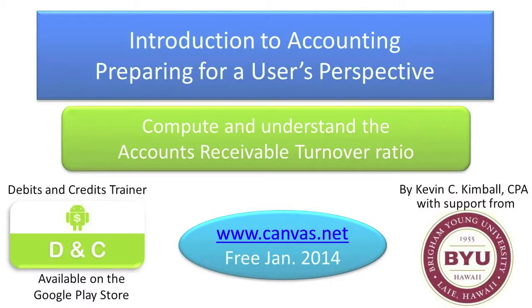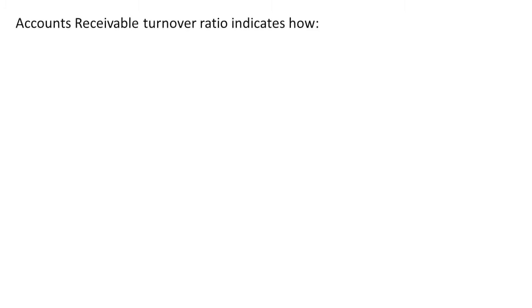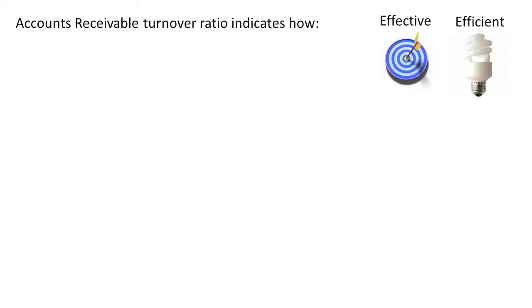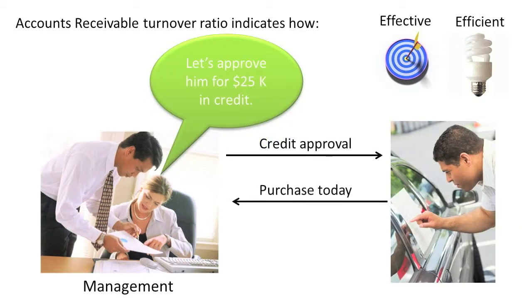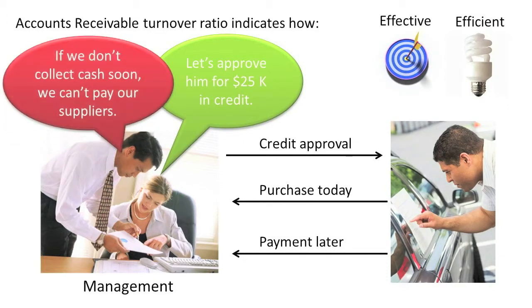Welcome to Introduction to Accounting: Preparing for a User's Perspective. The Accounts Receivable Turnover Ratio, or AR Turnover Ratio, indicates how effective and efficient management is at granting credit to and collecting cash from credit customers. When management takes too long to collect cash from customers, it will often have difficulty paying its own suppliers.